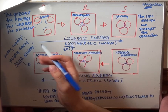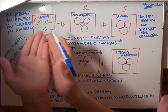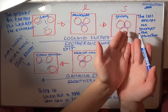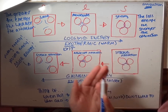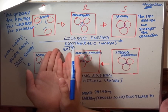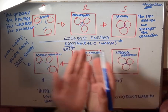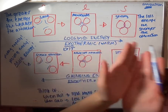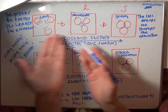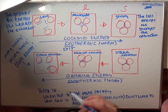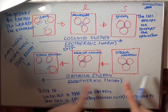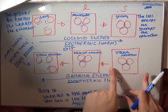So as you're going from a gas to a liquid to a solid, you are losing energy. This is called exothermic because the energy is exiting — it's released.